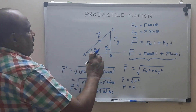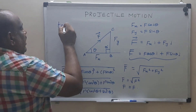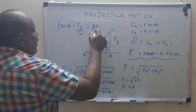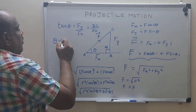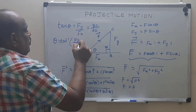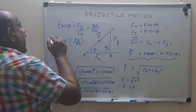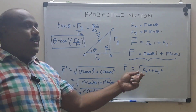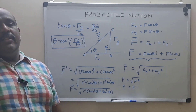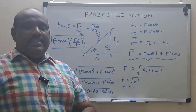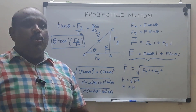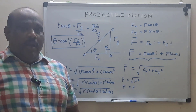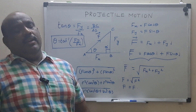We can also find the angle using tan theta = Fy / Fx = BC / AB, so theta equals tan inverse of (Fy / Fx). If we know Fy and Fx, we can find the angle between the resultant force and the horizontal. These are not related to projectile — this is just basic vector knowledge you should know before entering projectile motion. It covers how to resolve a vector into horizontal and vertical components and how to find the resultant magnitude and angle.